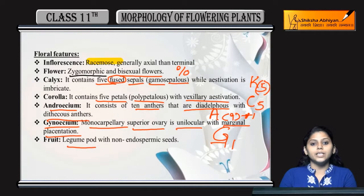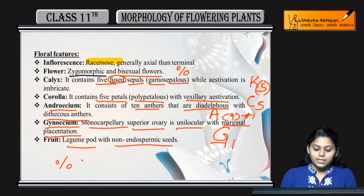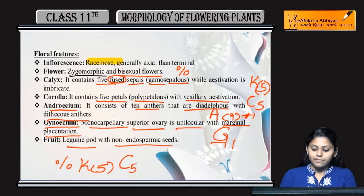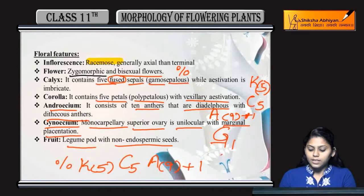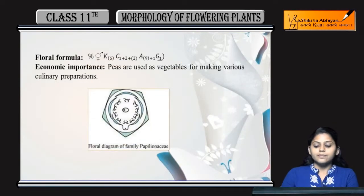Fruit example: legume pod with non-endospermic seeds. So the floral formula is: % K(5) C5 A(9+1) G underline 1. This is the floral formula.